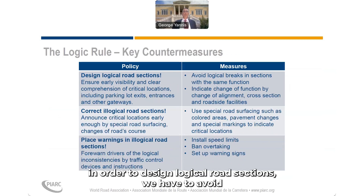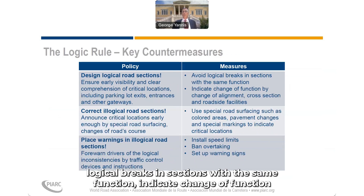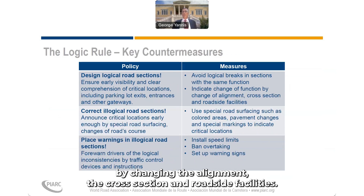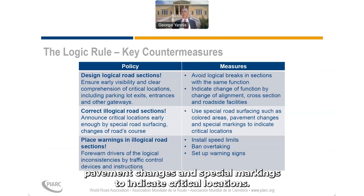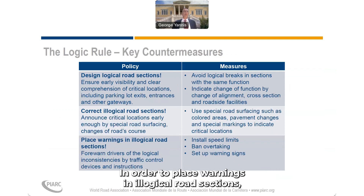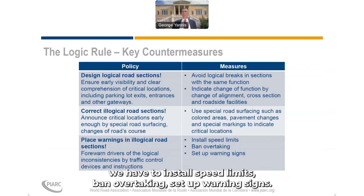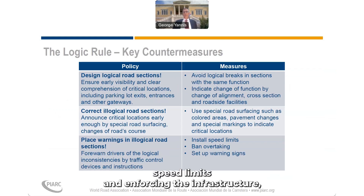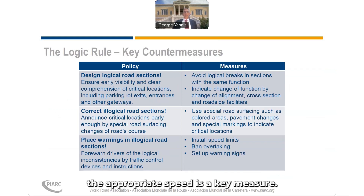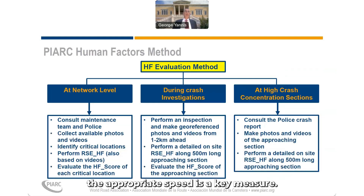Finally, for the logic rule, in order to design logical road sections we have to avoid logical breaks in sections with the same function, and indicate change of function by changing the alignment, cross section, and roadside facilities. To correct logical road sections we use spatial road surfacing such as colored areas, pavement changes, and spatial markings to indicate critical locations. To place warnings in the logical road section we install speed limits, ban overtaking, and set up warning signs. Several of these measures are common, and certainly speed limits and enforcing the appropriate speed through infrastructure is a key measure.